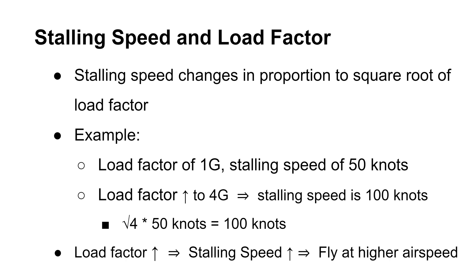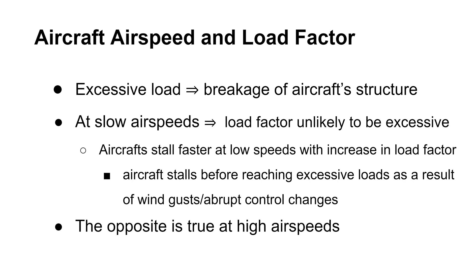Why so? Because a higher load factor increases the downward pull on the aircraft. This will decrease lift and require higher airspeed for sufficient lift to avoid stalls. The final topic to cover is the effect of aircraft speed on load factor. The amount of excess load that can be imposed on the aircraft depends on the airspeed. At slow speeds, the maximum available lifting force of the wing is slightly larger than the amount needed to support an aircraft's weight. Thus, the load is unlikely to become excessive in case of abrupt changes in controls or severe wind gusts. The reason is that the aircraft will stall before the load becomes too excessive. By excessive load, I mean the load that may damage the aircraft's structure.